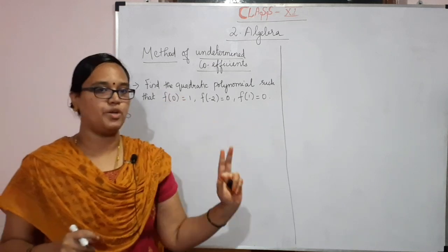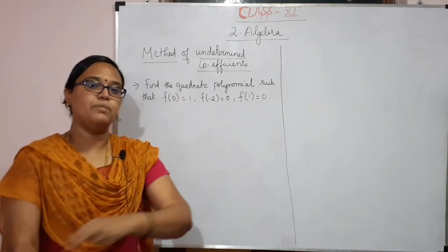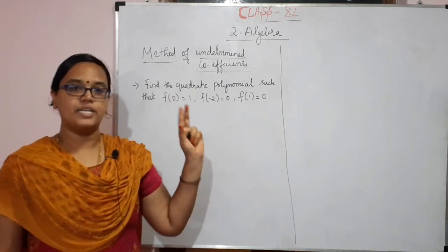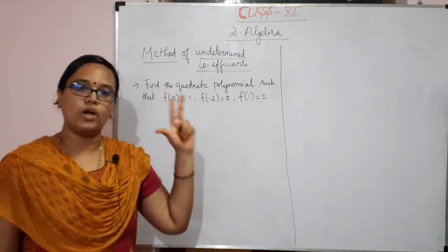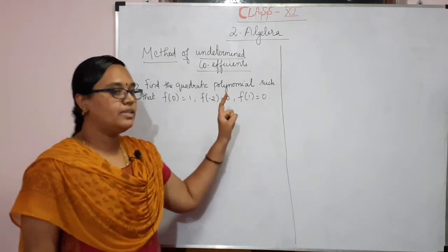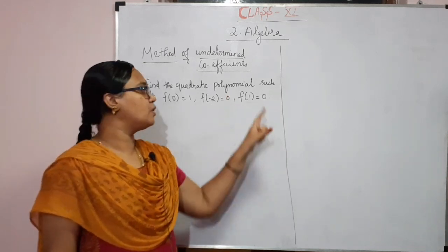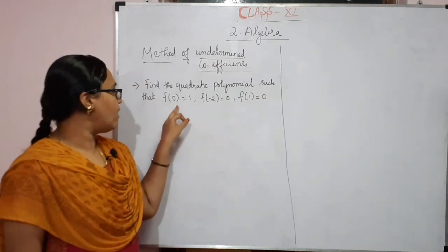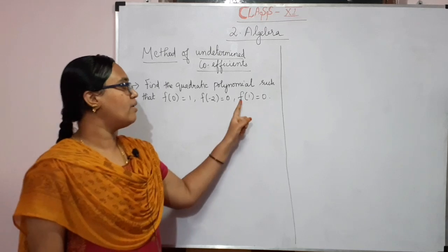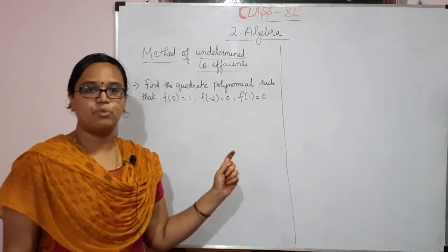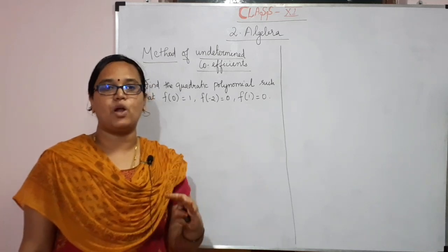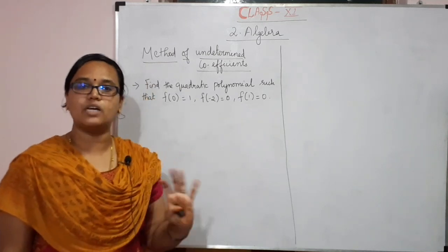The method of undetermined coefficients is used to construct a polynomial. Let's look at this question: find the quadratic polynomial such that f(0) = 1, f(−2) = 0, and f(1) = 0. If we have three conditions, we can satisfy and construct the polynomial.